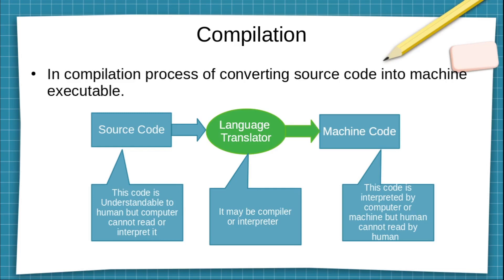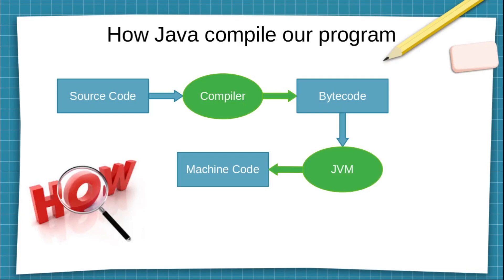The question is: how does Java compile our program? First, we have a source code, usually written in any text editor like Sublime or others. Then we have a Java compiler. The Java compiler takes this source code and, if there is no error present, converts it into another code called bytecode. We will cover what bytecode means in the next slide.